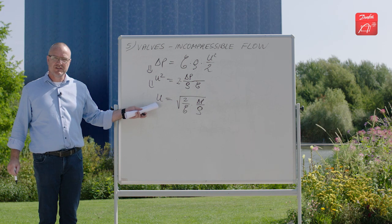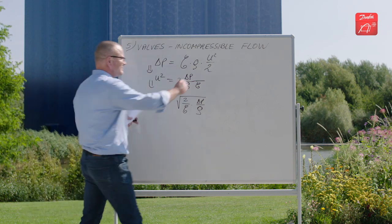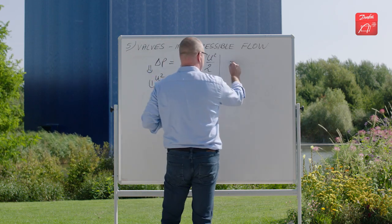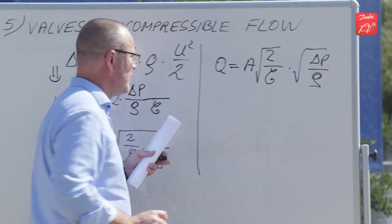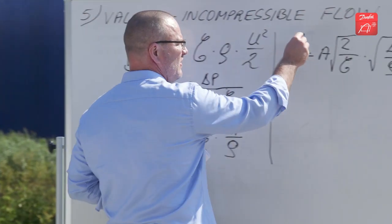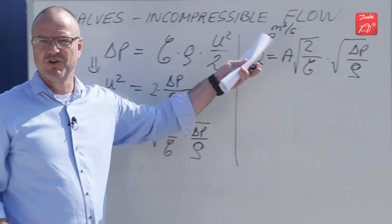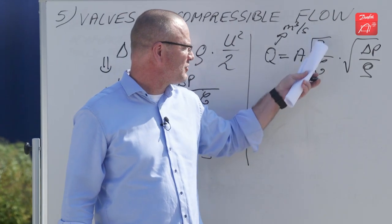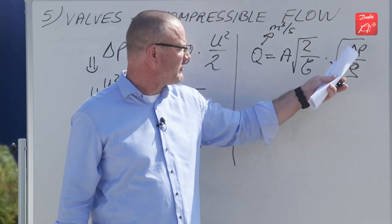So now we have an expression for the velocity. Let's multiply with area on both sides of the equation. When you multiply the velocity with the area, you get the flow or the volume flow rate with units cubic meters per second. Then you have the area, the square root of two divided by the resistance coefficient, and the square root of delta P divided by rho.